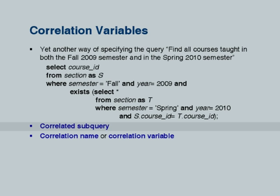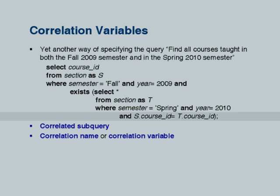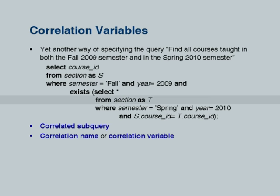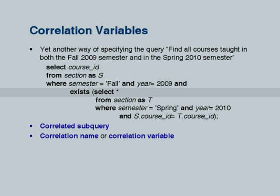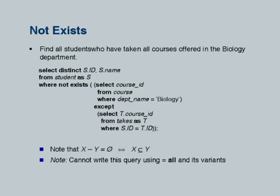When you evaluate this, for each section in fall 2009 you evaluate the subquery using the current course ID. If a particular section in fall 2009 also ran in spring 2010 as the same course, that tuple satisfies both conditions and EXISTS would be true — there is at least one tuple and it would get output. These are correlated subqueries, and although in this particular case we could have written it without correlation, there are cases where correlated subqueries make querying a lot easier.